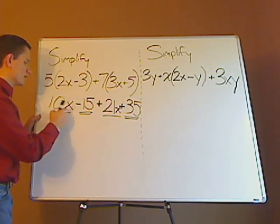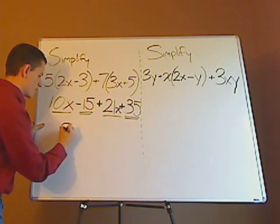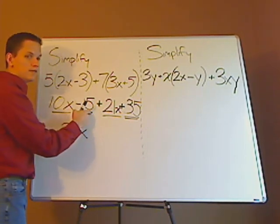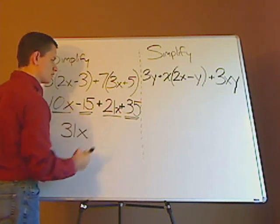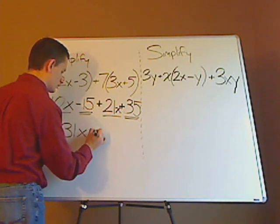And just combine them. What's 10x plus 21x? Right, that's 31x. And what's negative 15 plus 35? Right, it's plus 20.